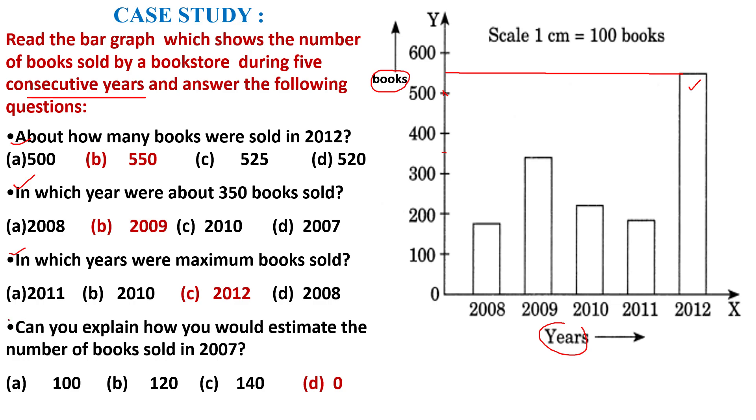Now, last question is, can you explain how would you estimate the number of books sold in 2007? If there is data of 2007, then you can write the number of books, how many books are sold. If there is no data, then you can think about your answer.